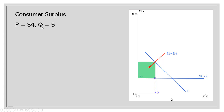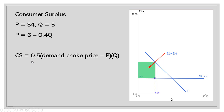Now let's get consumer surplus. We know price is $4, quantity is 5, and we have our inverse market demand. Consumer surplus equals one half times the demand choke price minus the profit maximizing price, all multiplied by the quantity. The demand choke price is the vertical intercept of the demand curve — when Q equals 0, P equals 6. So consumer surplus equals one half times (6 minus 4) times 5, giving us consumer surplus of $5.